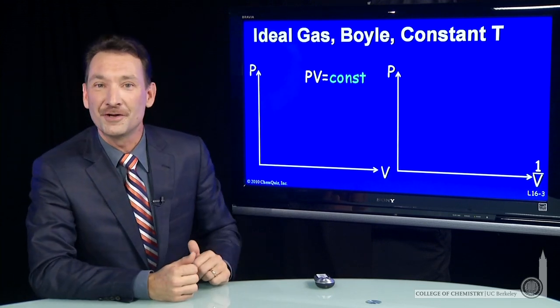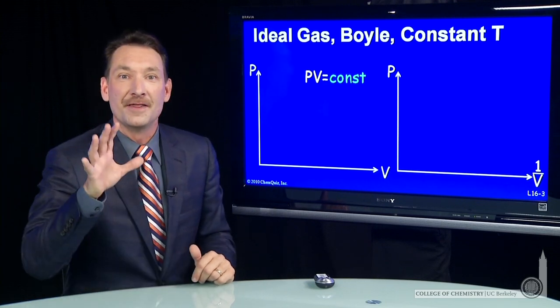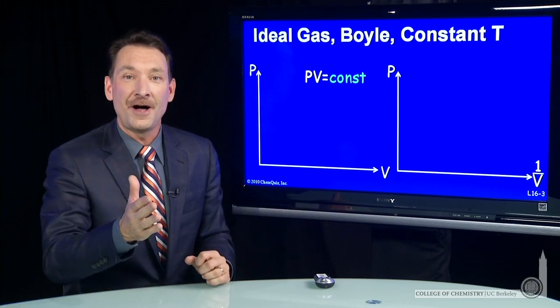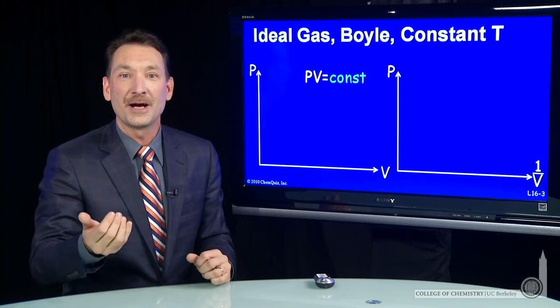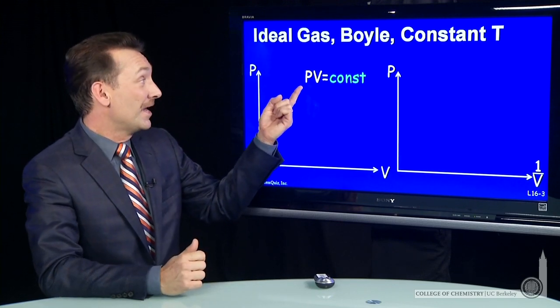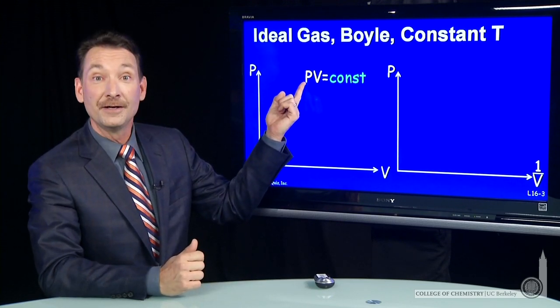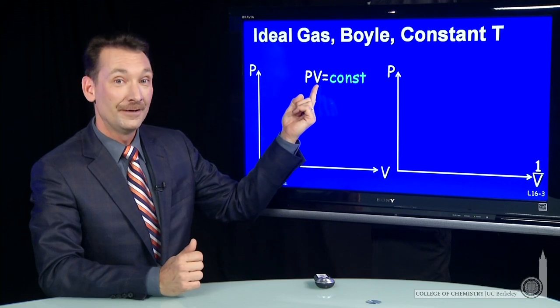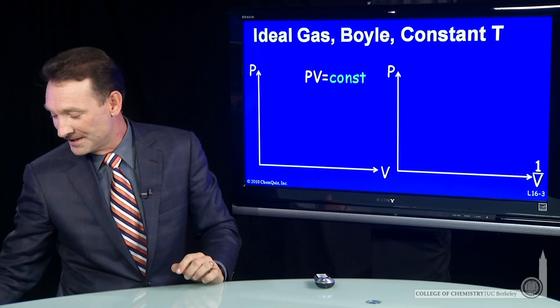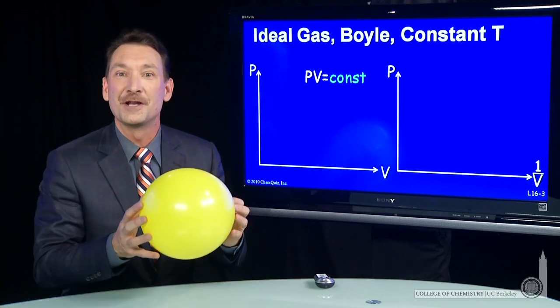Let's start with the pressure and the volume. For these circumstances that I've described, an ideal gas, the pressure and the volume multiply together to form a constant at constant temperature. That's a very interesting property. If the pressure goes up, the volume must go down, because their product has to be a constant. So here's a sample of gas trapped in a balloon.